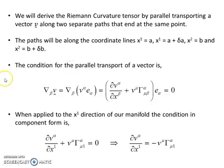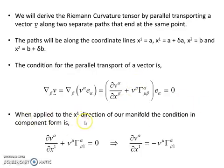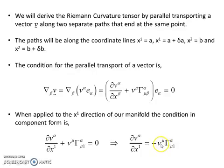The condition for parallel transport is that the covariant derivative of the vector is zero. These are the components, this is the basis vector, and this expression being zero is the condition for parallel transport. If we apply this to the x1 direction, the condition in component form is dv alpha dx1 plus v mu times gamma — the affine connection — alpha upper index, mu and one the lower indices, all equals zero. That implies dv alpha dx1 equals the negative of the vector component times the affine connection.